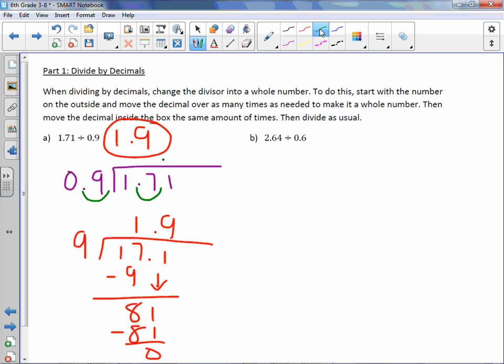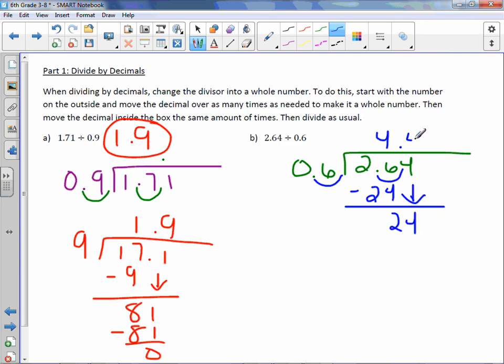Letter B. 0.6 into 2.64. So to make this a whole number, move it over once. Move it over once in the box and bring our decimal point up, our new decimal point. And then this is a whole number of 6. 6 goes into 26, 4 times, which is 24. Subtract and get 2. Bring down the 4. 6 into 24, 4 times. Subtract and get 0. Our quotient is 4.4.